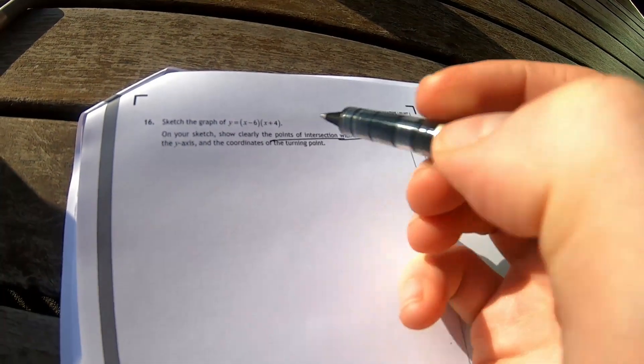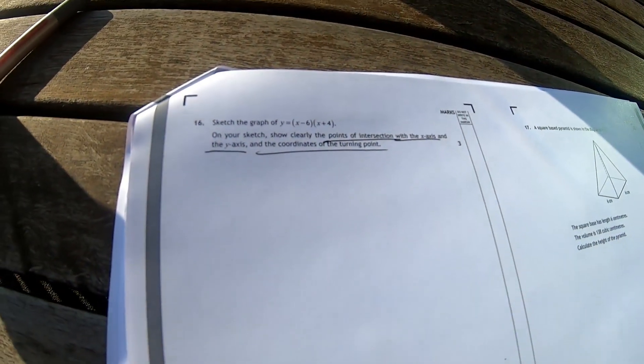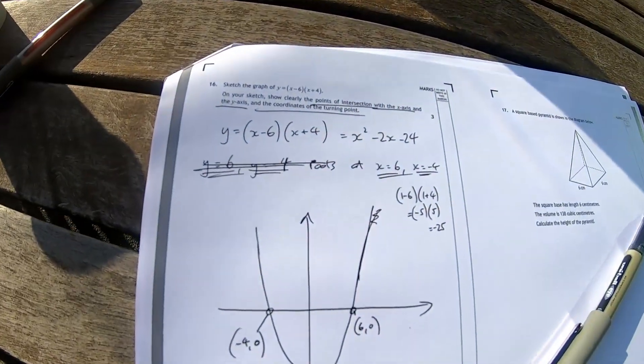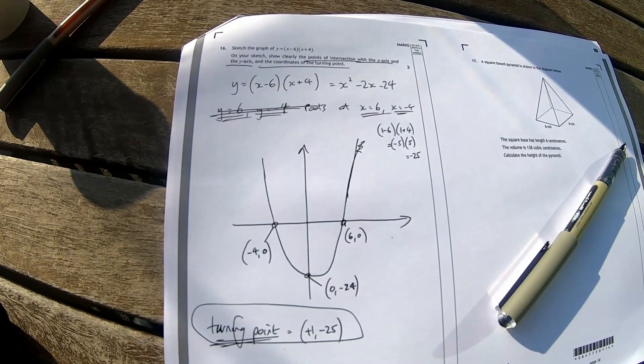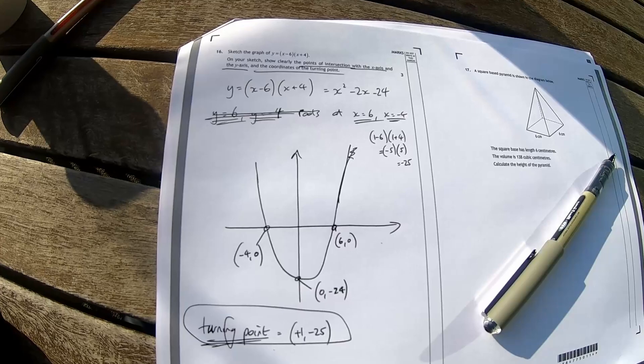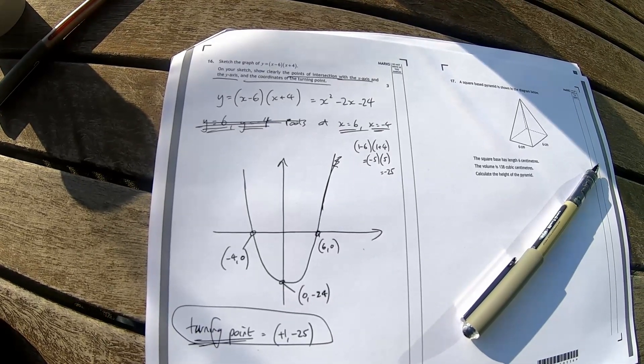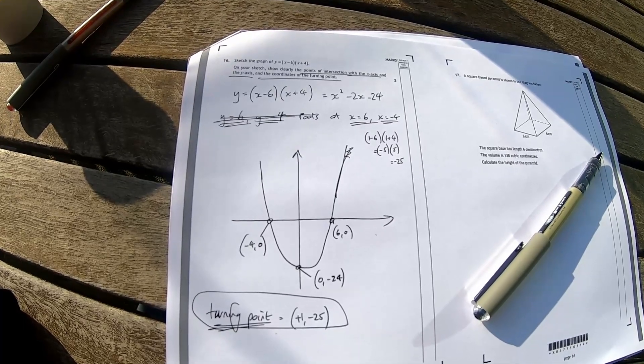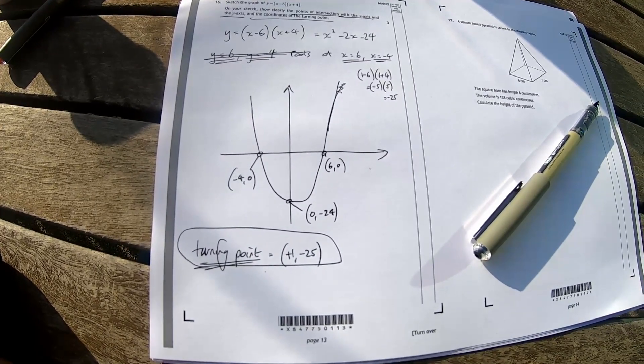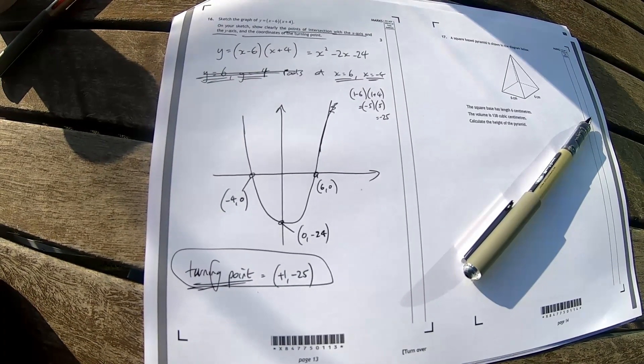I've got to show the points of intersection with the x-axis and the y-axis and the coordinates of the turning point. For this one here I had to sketch it and label the intersections with the x and y-axis which were easy. Then I had to label the coordinates of the turning point. Now I could have double differentiated this but I couldn't be bothered. It just felt like it was going to be x is plus one. So that's what I wrote.